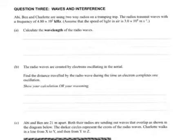Question 3 on waves and interference. We've got Abby, Ben and Charlotte using two-way radios on a tramping trip. The radios transmit waves with a frequency of 4.80 times 10 to the 5 kilohertz.